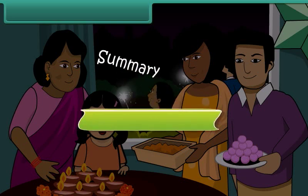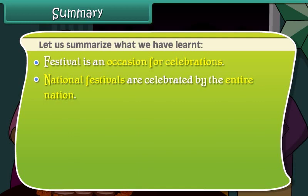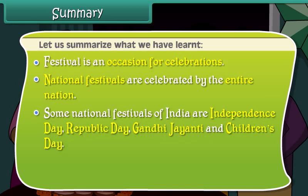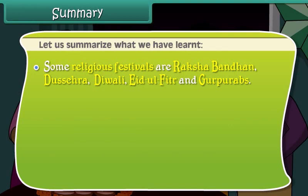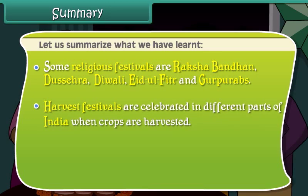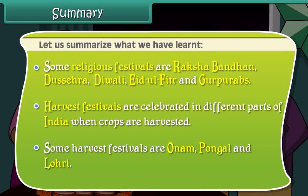Summary: A festival is an occasion for celebrations. National festivals are celebrated by the entire nation — some national festivals of India are Independence Day, Republic Day, Gandhi Jayanti, and Children's Day. Religious festivals are celebrated by different religions — some examples are Raksha Bandhan, Dussehra, Diwali, Eid ul-Fitr, and Guru Purabs. Harvest festivals are celebrated in different parts of India when crops are harvested — some examples are Onam, Pongal, and Lohri.